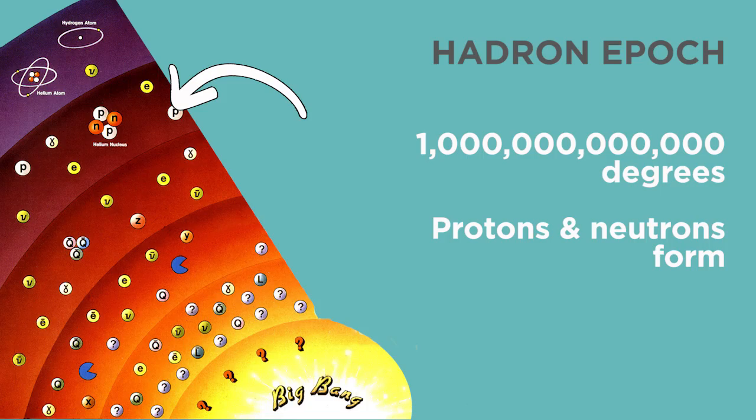We finally close out our first second of existence with the Hadron epoch, where the universe cools to a vacation-worthy trillion degrees, allowing quarks to combine to form protons and neutrons. Neutrons, by the way, were created by the combination of an electron and a positron, and when they collided, they released a packet of energy in the form of a neutrino, and those neutrinos are still flying around the universe today.